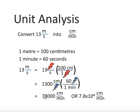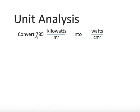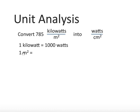So that's one conversion. Now I'm going to walk you through another conversion: convert 785 kilowatts per meter squared into watts per centimeter squared. The extra complication here is that we're dealing with meters squared, not just meters. Step one: write down the basic definitions. A kilowatt is 1,000 watts.